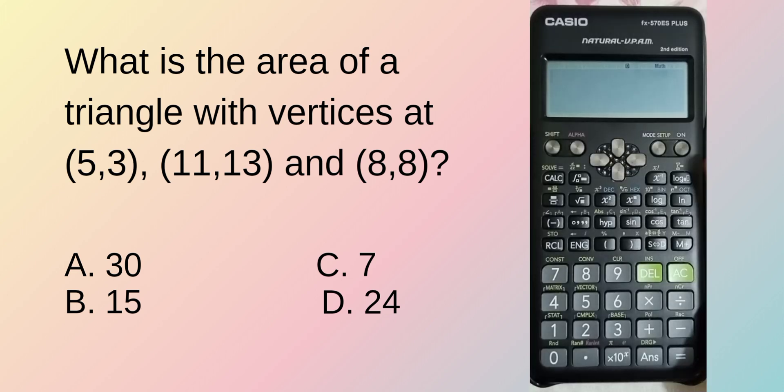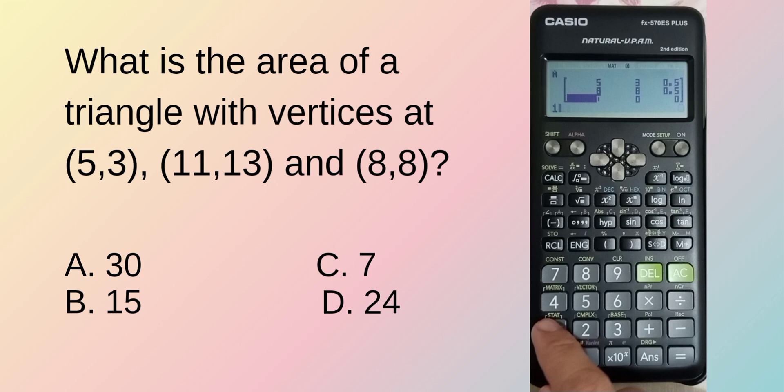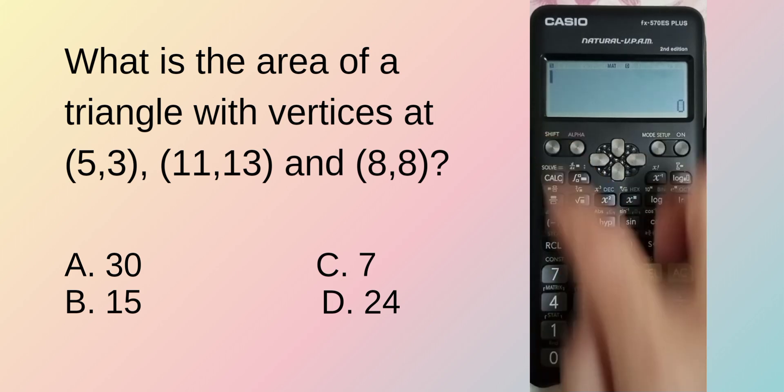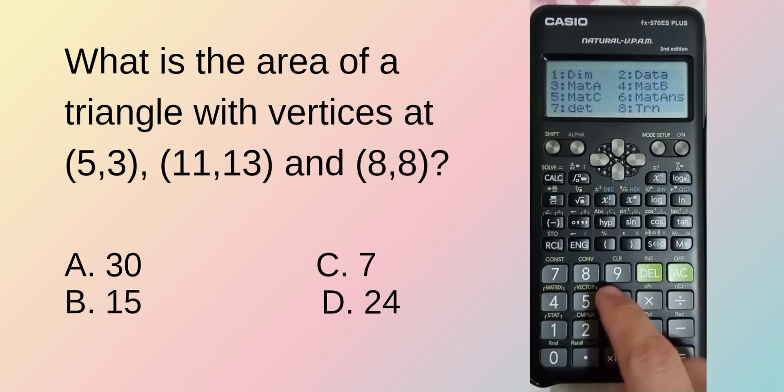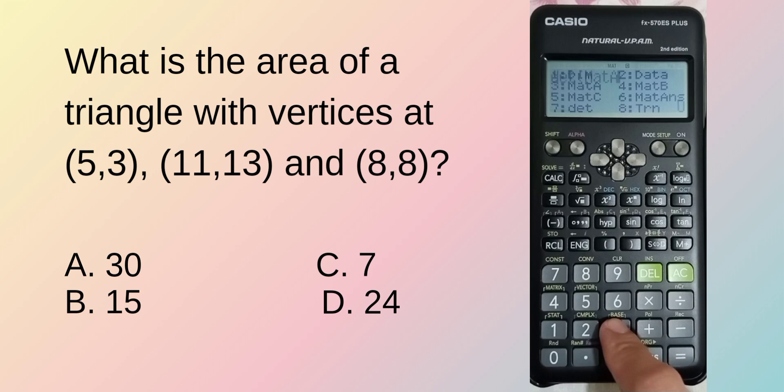Trying the clockwise rotation. Let's go back. Mode 6,1,1. Then, start with 5,3, 0.5. Then, we'll follow clockwise, so 8,8 is next. Then, 0.5. Then, 11,3. Remember, that 11,13 we changed to 11,3 to form a triangle. Shift, 4, 7. Shift, 4, 3. Then, equal sign. Oh, see? Negative 15. The area became negative because of the rotation we considered.